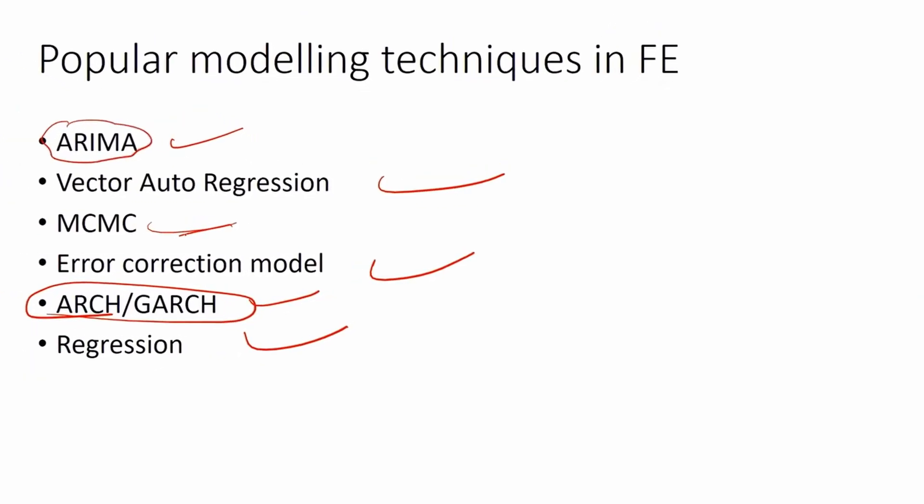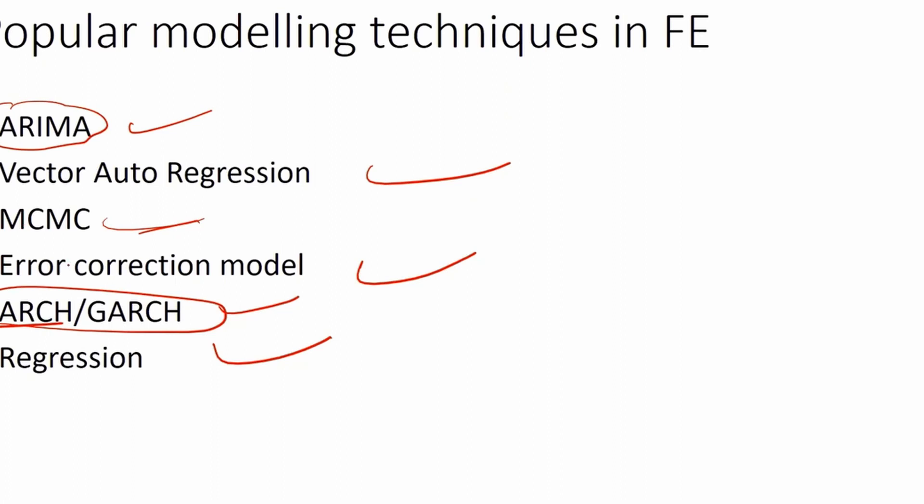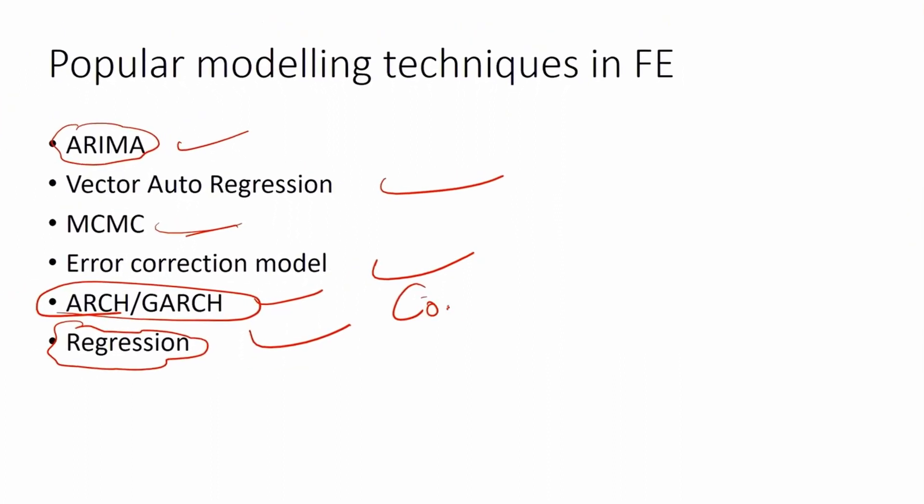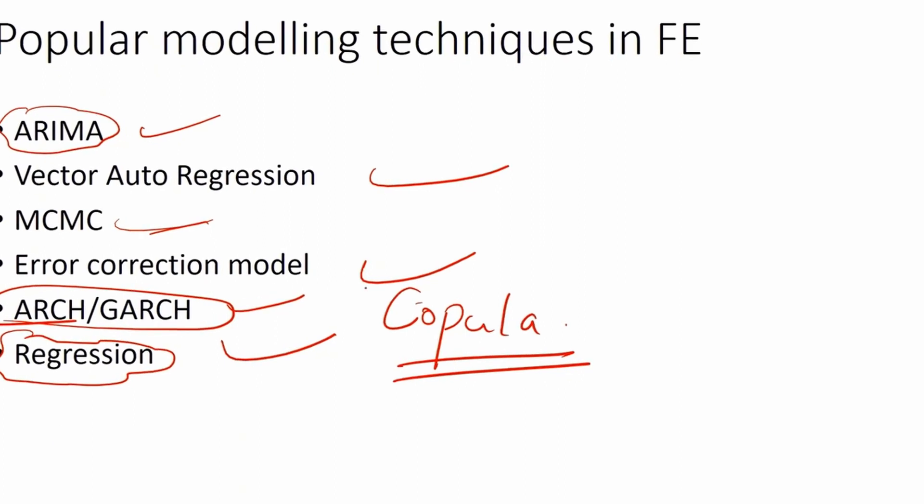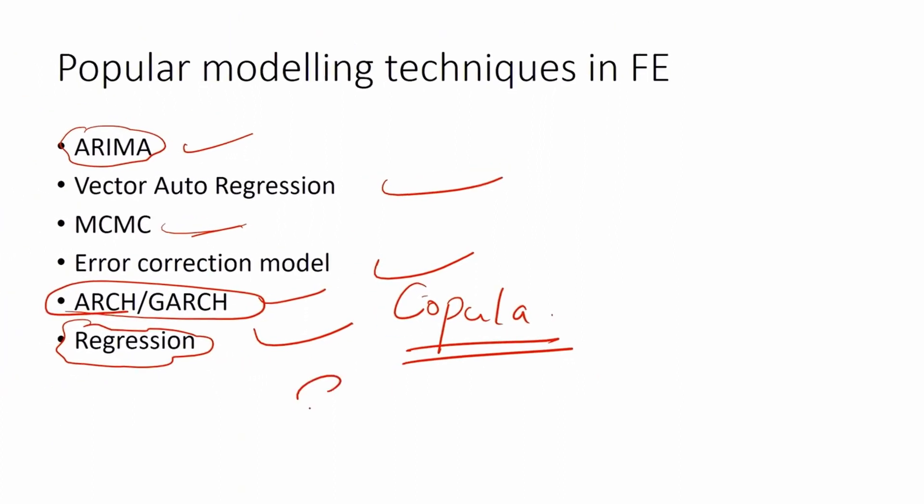Apart from that, you also use techniques like copula. Copula is heavily used - it's some sort of a correlation. Extreme value theory is also used.